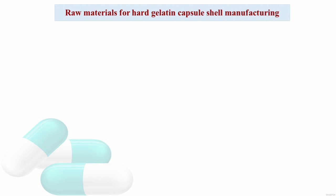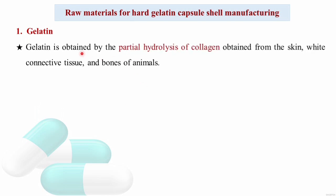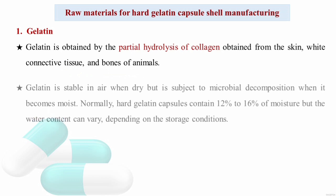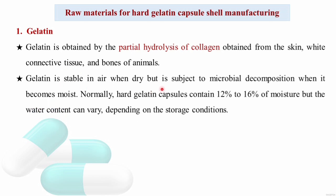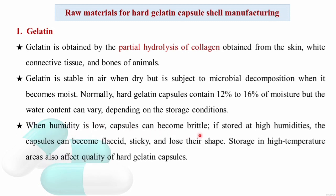Regarding raw materials for hard gelatin capsule shell manufacturing: gelatin is the main ingredient, obtained by partial hydrolysis of collagen from the skin, white connective tissues, and bones of animals. Gelatin is stable in air when dry but subject to microbial decomposition when moist. Hard gelatin capsules normally contain 12 to 16 percent moisture. When humidity is low, capsules can become brittle; when stored at high humidity, capsules become flaccid, sticky, and may lose their shape. High temperature storage also affects quality.